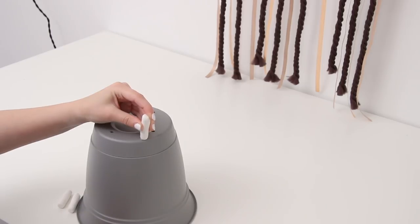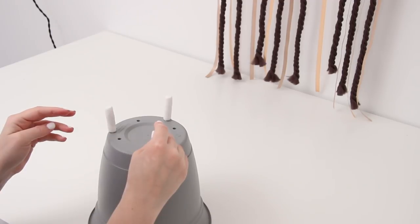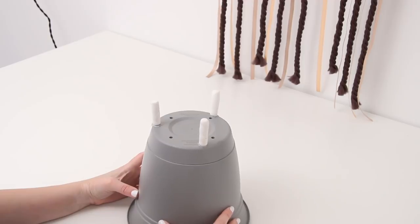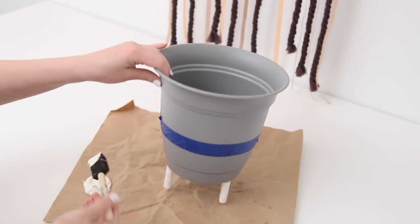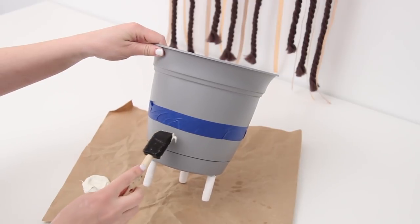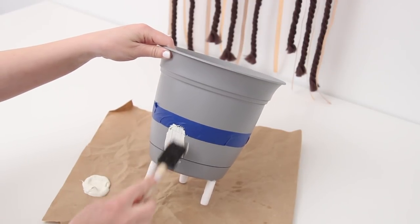I measured how big the pot is around and divided that by three, made a mark every five inches. I took each of the legs after they were done cooling and glued them on with some E6000, each about five inches apart. Once that was fully dry and secure, I took some white acrylic paint and painted the bottom half of the planter using painters tape to tape it off.